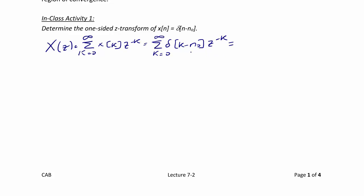What we know here is that when you have an impulse at n0 and z to the negative k, which is some function that has several values, the only time you get a non-zero value is when z is evaluated at n0. So the result of this summation is z to the negative n0.